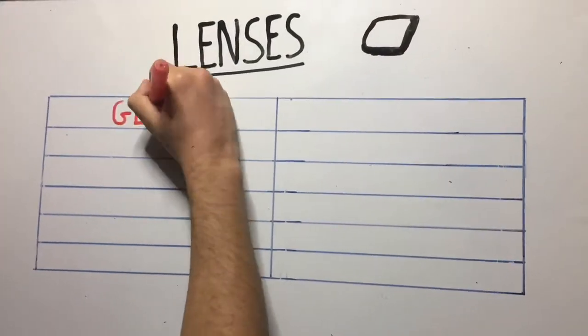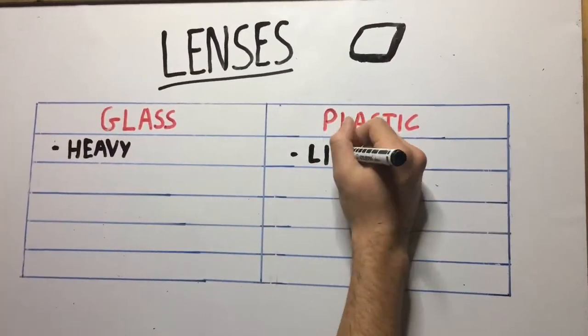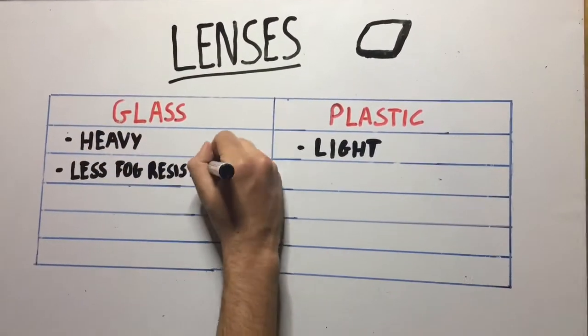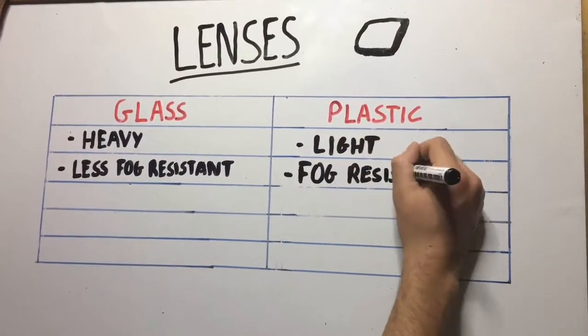Lenses can be made out of either glass or plastic. The difference in their properties is shown in this table.